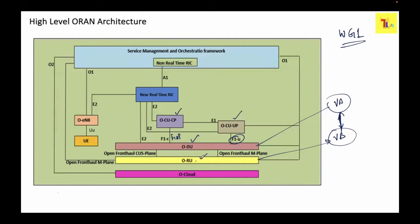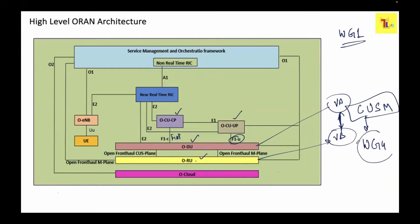When DU is sending something to RU and RU is going to radiate towards the UE, the control plane and user plane packets must reach the ORU in a predefined time. If they don't reach in the predefined time interval, the latency requirements won't be met. For that reason, planes have been introduced — Control, User, Synchronization, and Management — as per Working Group 4.